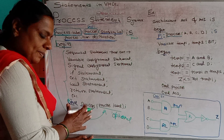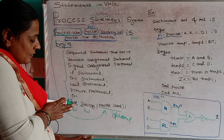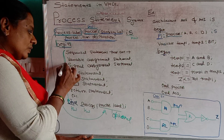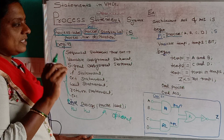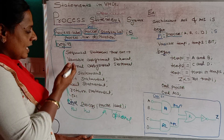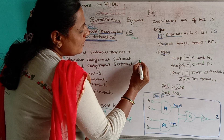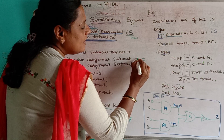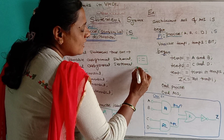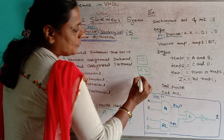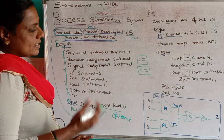Afterwards, you write 'end process' — these are keywords. After 'begin' and before 'end process', you can write any number of sequential statements. For example, as I have written here, it may be a variable assignment statement or a signal assignment statement. This is called the variable assignment statement, and this is called the signal assignment statement.